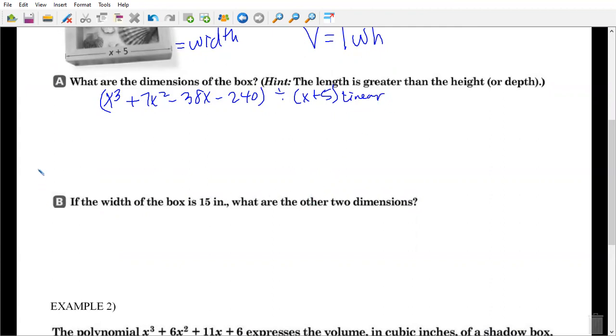So when possible, I choose synthetic. If you're a long division person, by all means, use long division. x plus 5 means that my x equals negative 5. So in my house goes negative 5.